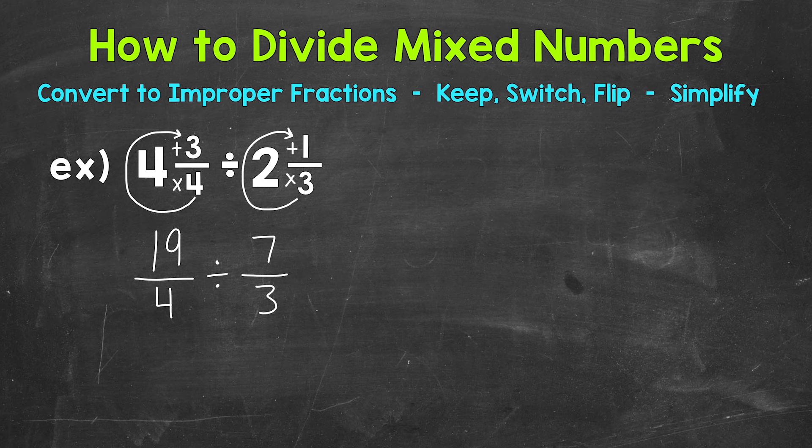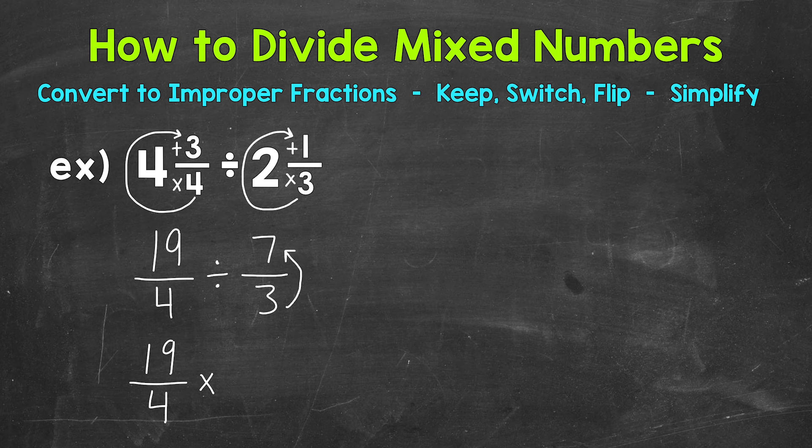Let's keep our first fraction here, our first improper fraction, so 19 fourths. Then we switch or change our division to multiplication. And then we flip our second fraction, our second improper fraction here. So the denominator becomes the numerator and the numerator becomes the denominator. This is called the reciprocal. So we have 3 sevenths.